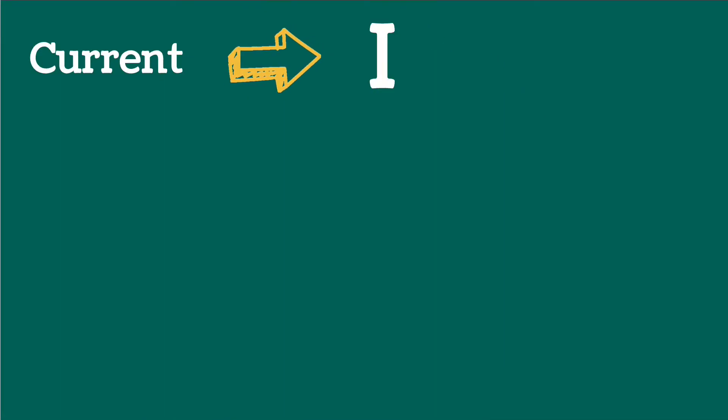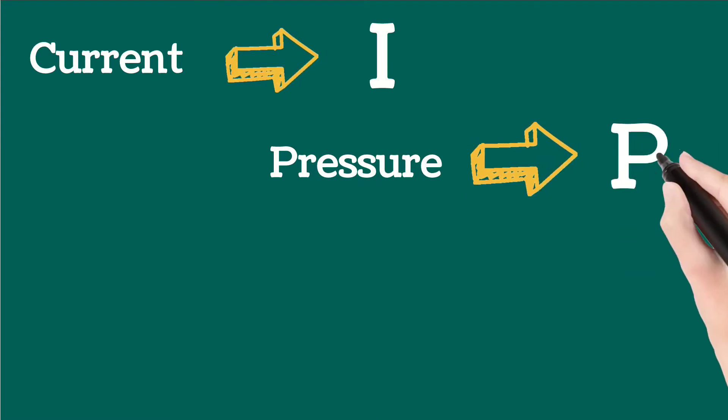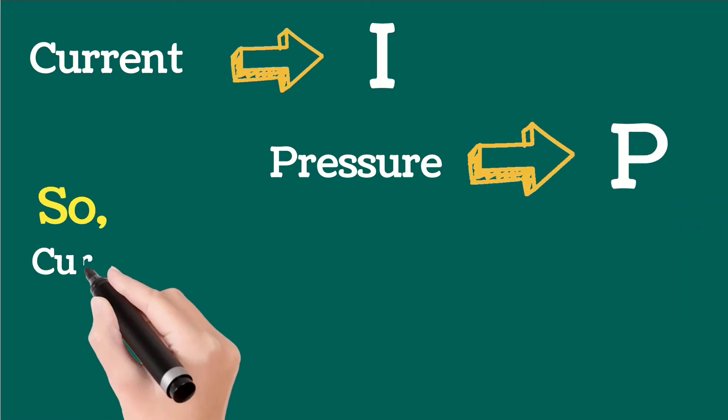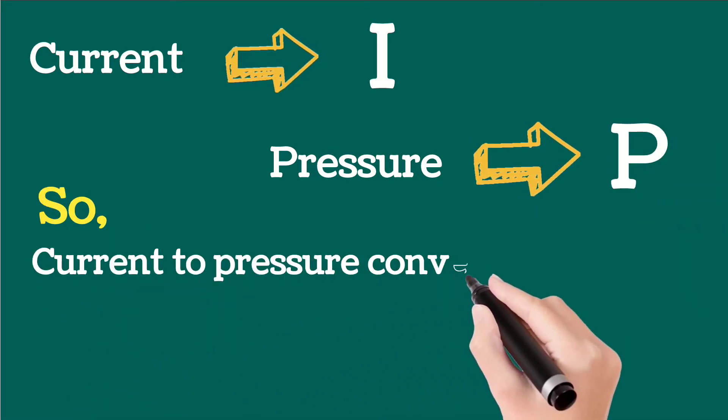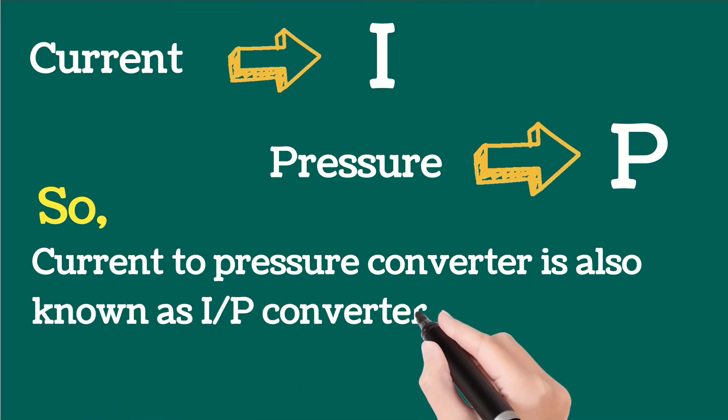Current is denoted by I. Pressure is denoted by P. So current to pressure converter is also known as IP converter or I to P converter.